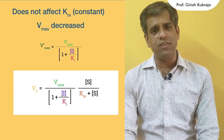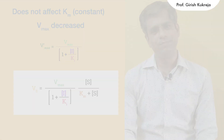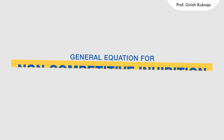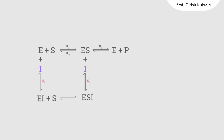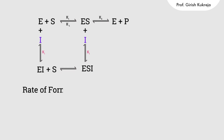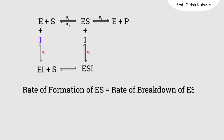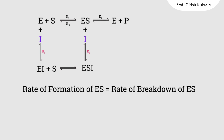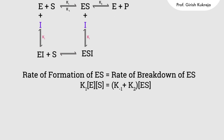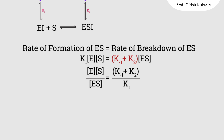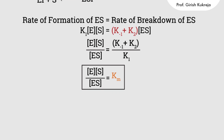Let's have a look at the derivation of this equation. The general equation in the presence of a non-competitive inhibitor is given by: under steady-state conditions, the rate of formation of ES equals the rate of breakdown of ES. We have K1 × E × S = (K'1 + K2) × ES. Taking constants to one side, we have E × S / ES = (K'1 + K2) / K1.